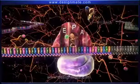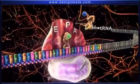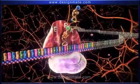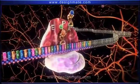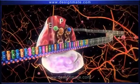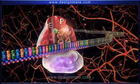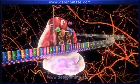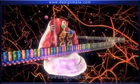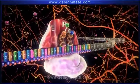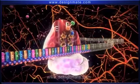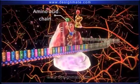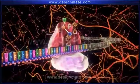Meanwhile, another tRNA carrying an amino acid molecule attaches to the A site. This is followed by the binding of the amino acid molecules. Repetition of this process leads to the formation of an amino acid chain. This event is called elongation.